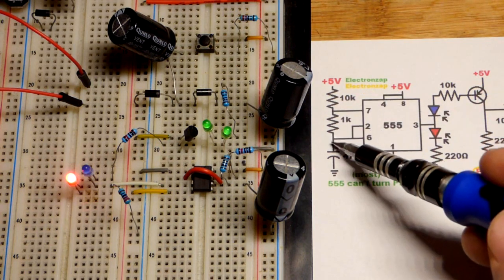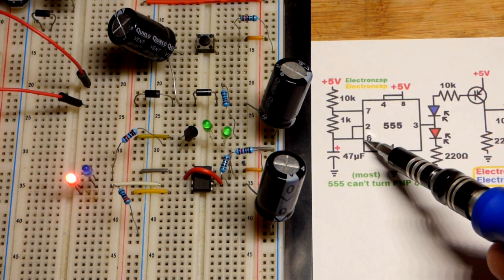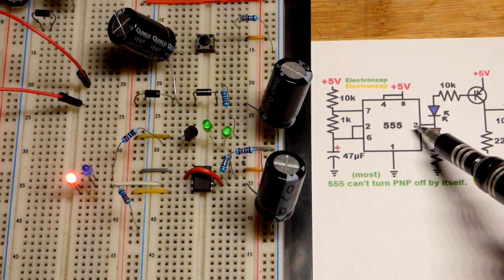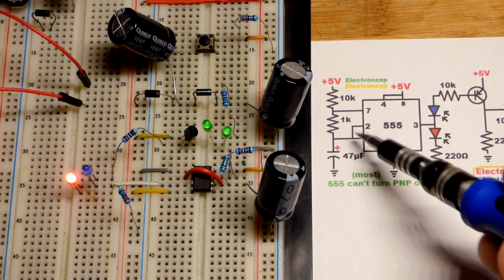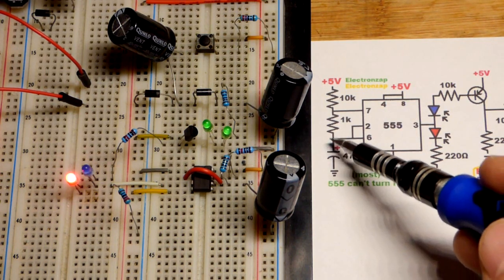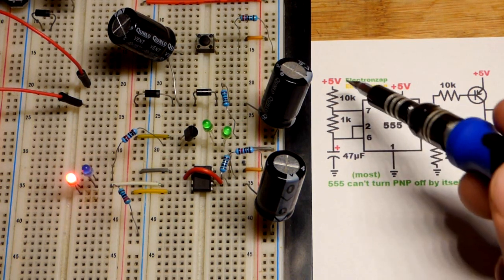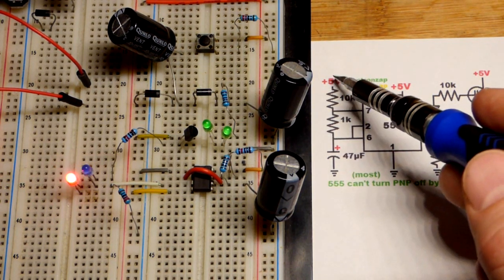So it's charging, the output is high through 11,000 ohms of resistance to 2 thirds of the supply voltage. Then the output goes low, connects to pin 7 so the capacitor will discharge through 1000 ohm so 1 11th of the total resistance that it did while charging.